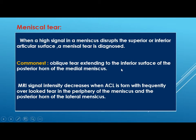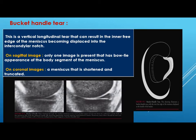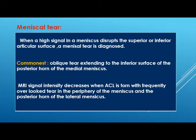A meniscal tear is diagnosed when high signal in the meniscus disrupts the superior or inferior articular surface. The commonest site is an oblique tear extending to the inferior surface of the posterior horn of the medial meniscus. When there is an ACL tear, the MRI signal intensity decreases and a frequently overlooked tear occurs in the periphery of the meniscus and the posterior horn of the lateral meniscus.